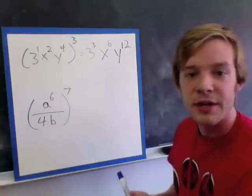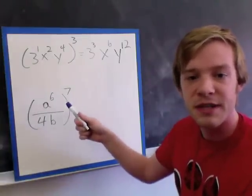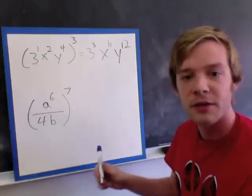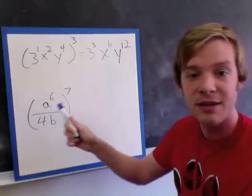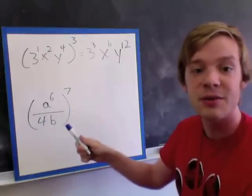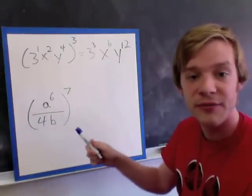Second problem right here, we've got a to the power of 6 over 4b. Now I need to bring this 7 with the a, in with the 4, and in with the b. So it's going into 3 different things here.